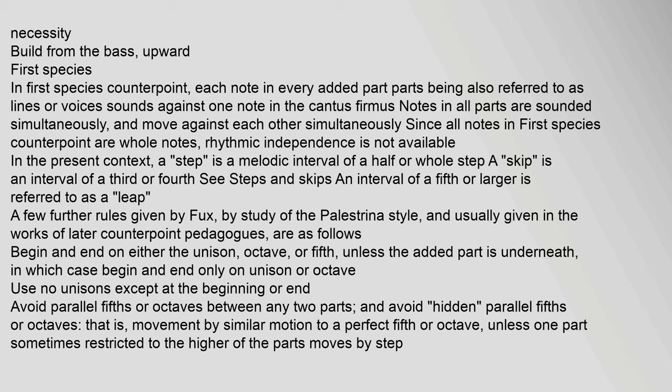The interval of a tenth should not be exceeded between two adjacent parts unless by necessity; build from the bass upward. In first species counterpoint, each note in every added part — parts being also referred to as lines or voices — sounds against one note in the cantus firmus. Notes in all parts are sounded simultaneously and move against each other simultaneously. Since all notes in first species counterpoint are whole notes, rhythmic independence is not available. A step is a melodic interval of a half or whole step; a skip is an interval of a third or fourth; an interval of a fifth or larger is referred to as a leap. Begin and end on either the unison, octave, or fifth, unless the added part is underneath, in which case begin and end only on unison or octave.